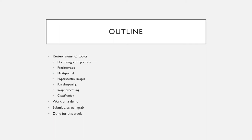A short outline: we're going to review a couple of remote sensing topics — electromagnetic spectrum, panchromatic, multispectral, hyperspectral, pan sharpening, and image processing, specifically pre-processing. We'll talk a little about classification, then work through some demos. At the end of the demos you're going to do some stuff on your own, take a screenshot of what I ask, and submit that for your lab score.